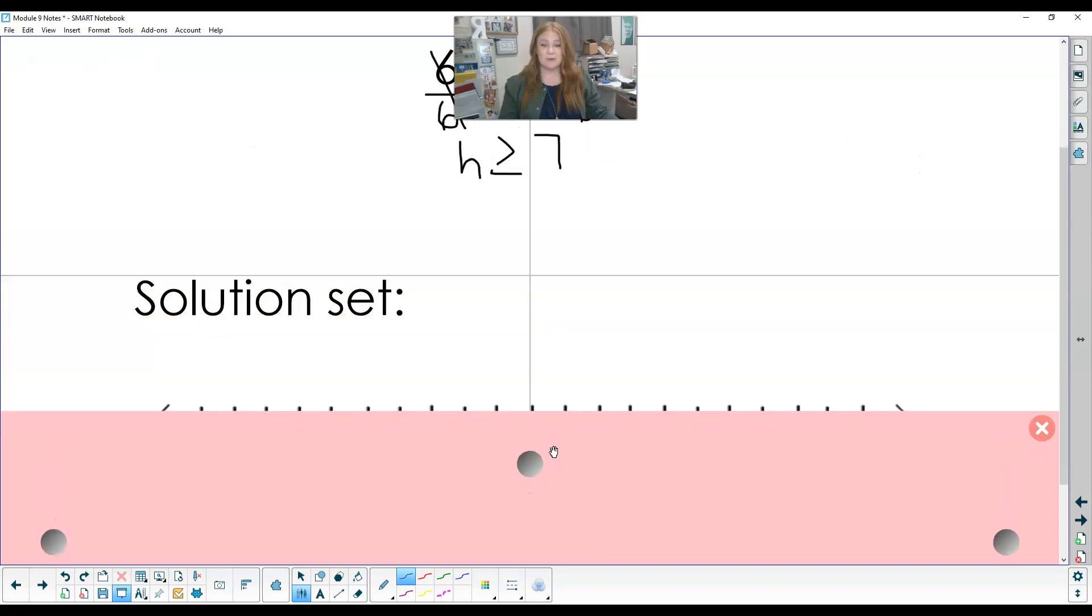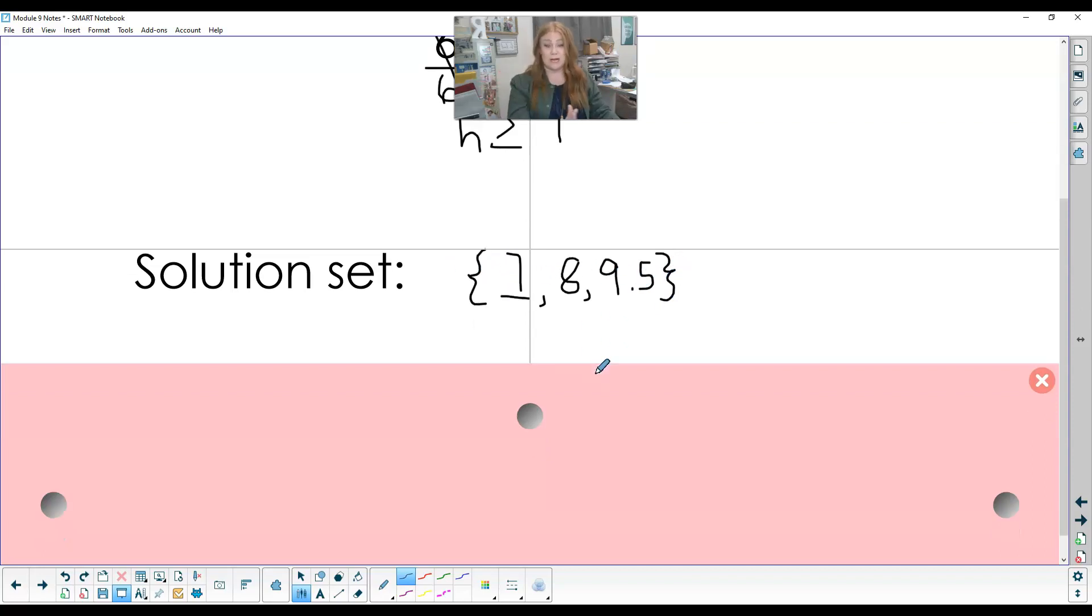So the next thing we're going to do is write a solution set. So H is greater than or equal to 7. So I'm asking myself, can it equal 7? Yes. I'm adding 7 in my solution set. And then I need something bigger. So could it be 6? No, that is smaller. Could it be 8? Yes. Could it be 9.5? Yes. That is greater. So all of these are solutions that are all equal or greater than 7.